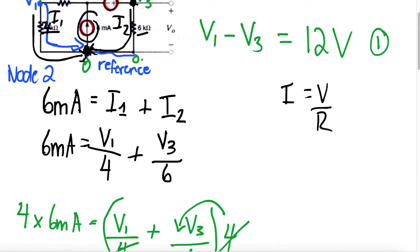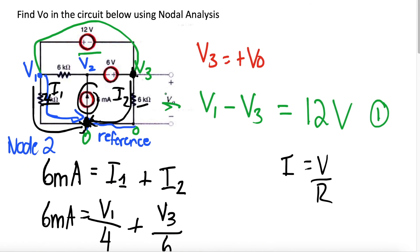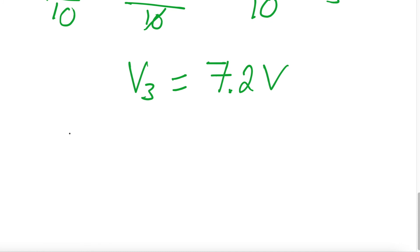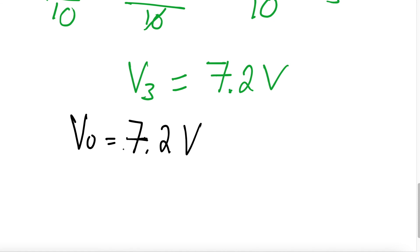Our goal was to find V0, and from the start we said V3 equals the positive of V0 because V3 is connected to the reference node. So our final answer is V0 equals 7.2 volts. That is how we solved V0 for this circuit using nodal analysis.